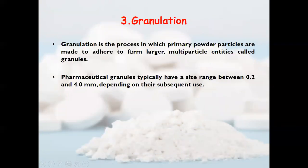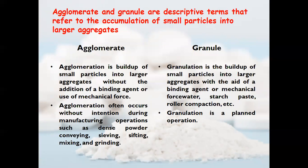Granulation is the process in which primary powder particles are made to adhere to form larger multi-particle entities called granules. Pharmaceutical granules typically have a size range between 0.2 to 0.4 mm depending on their subsequent use. An agglomerate is the build-up of small particles into larger aggregates without any addition of binding agent or use of mechanical force, whereas granulation uses a binding agent, mechanical force, or a vehicle such as water or starch paste.